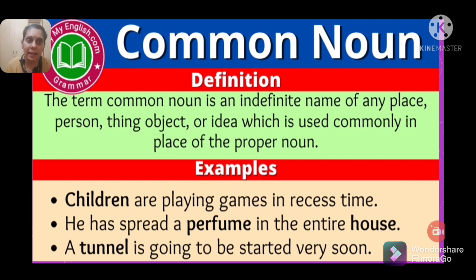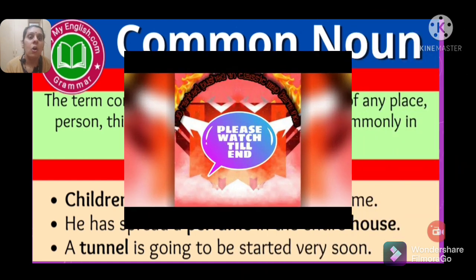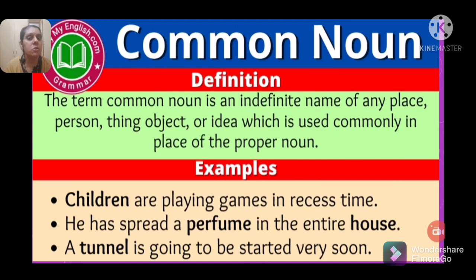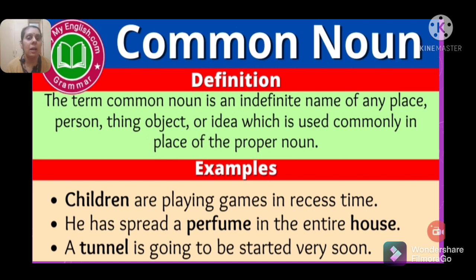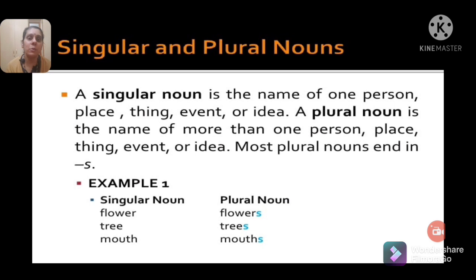A common noun is an indefinite, general name of any person, place, thing, object, or idea — used commonly in place of a proper noun. Examples: 'Children are playing games in recess time' — children is a general name. 'He has spread perfume in the entire house' — perfume and house are general names. 'A tunnel is going to be started very soon' — tunnel is a general name. These are all common nouns.